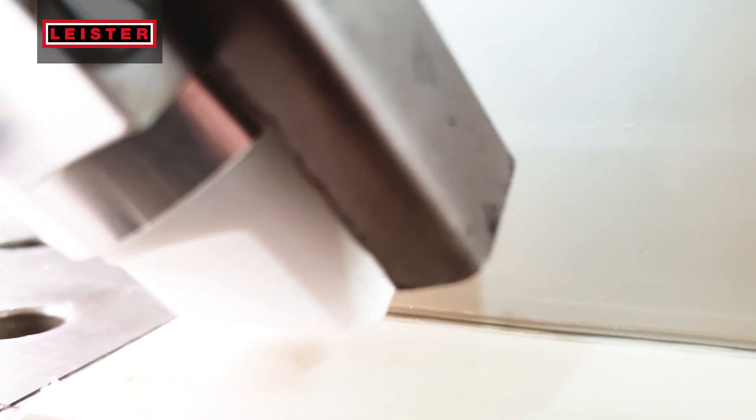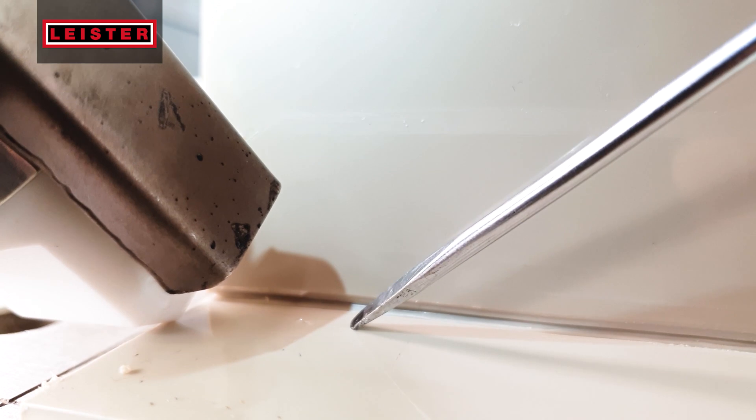To begin welding, preheat the base material using the hot air from the Fusion One preheat nozzle and verify the base material preheat depth with a screwdriver.